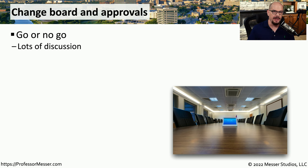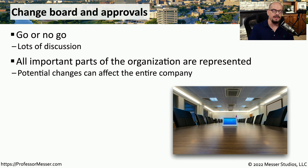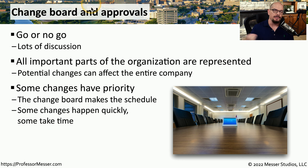Once you provide all of this information to the change control board, they can decide whether the change should be implemented. This board usually consists of individuals from different parts of the organization, each with different requirements for access to their data and applications. Working together, they can understand the risks of implementing the change and the priorities associated with each group. For example, fixing a critical problem with an application used by everyone might have higher priority than upgrading an operating system on a single laptop.